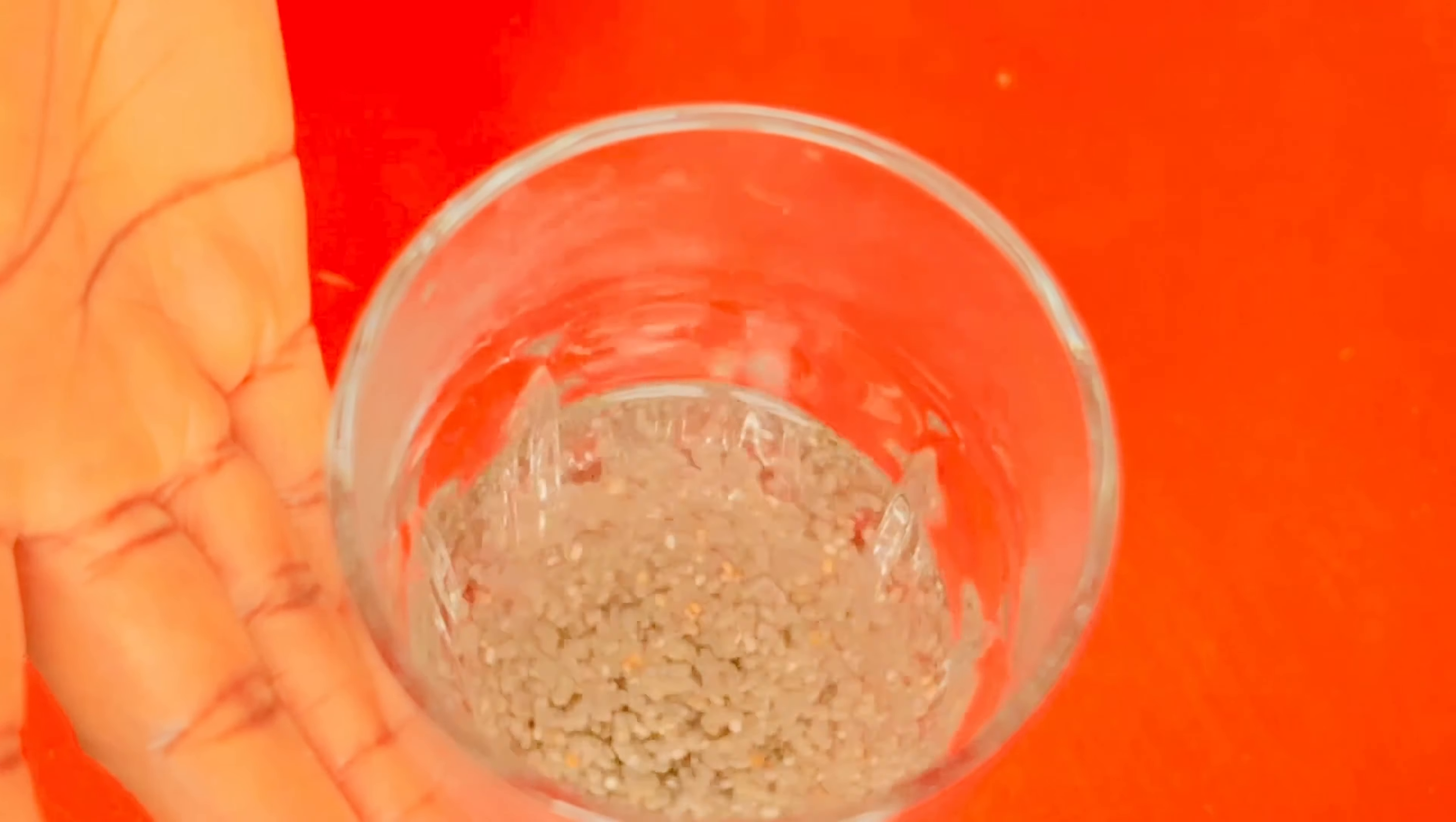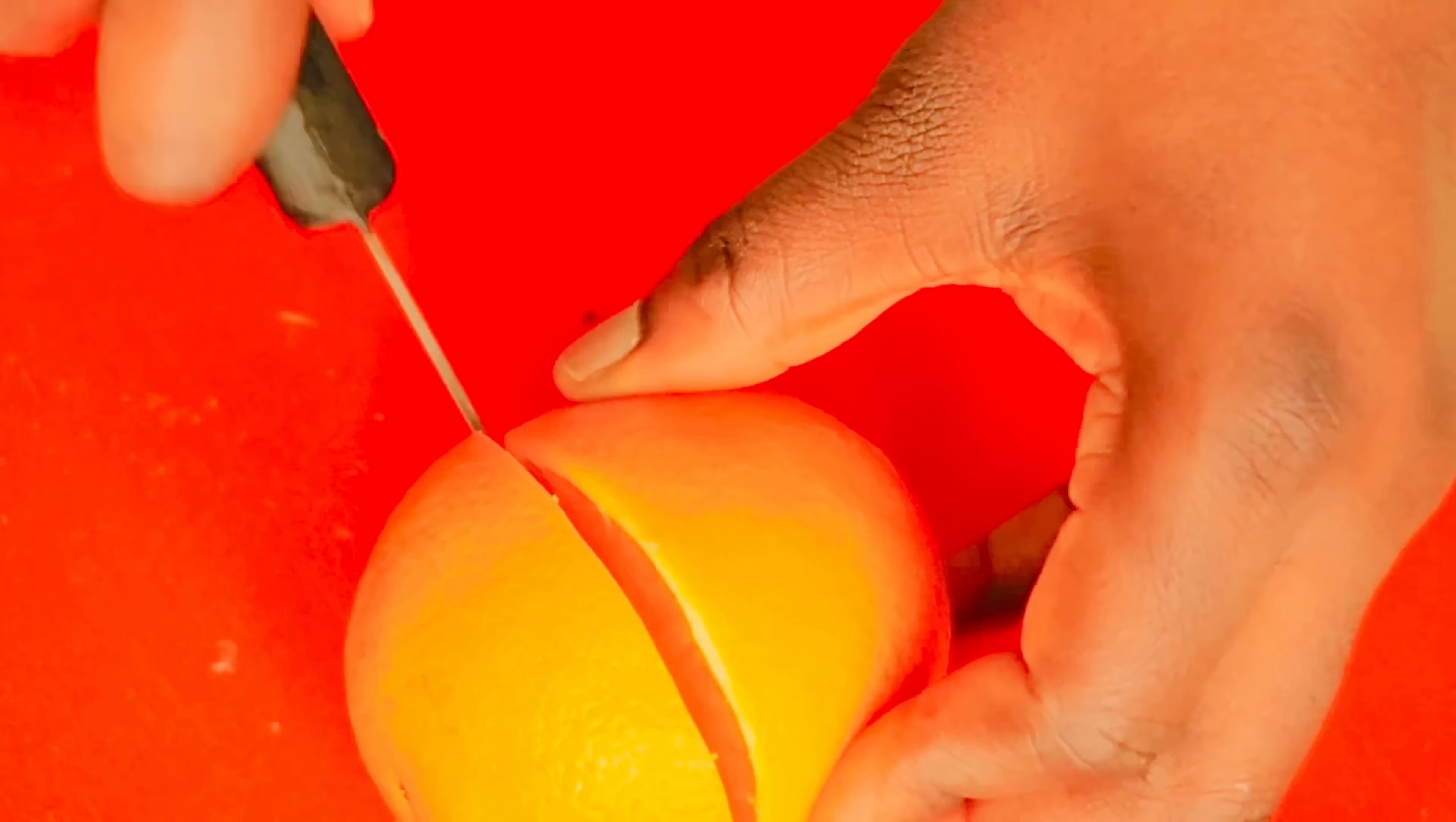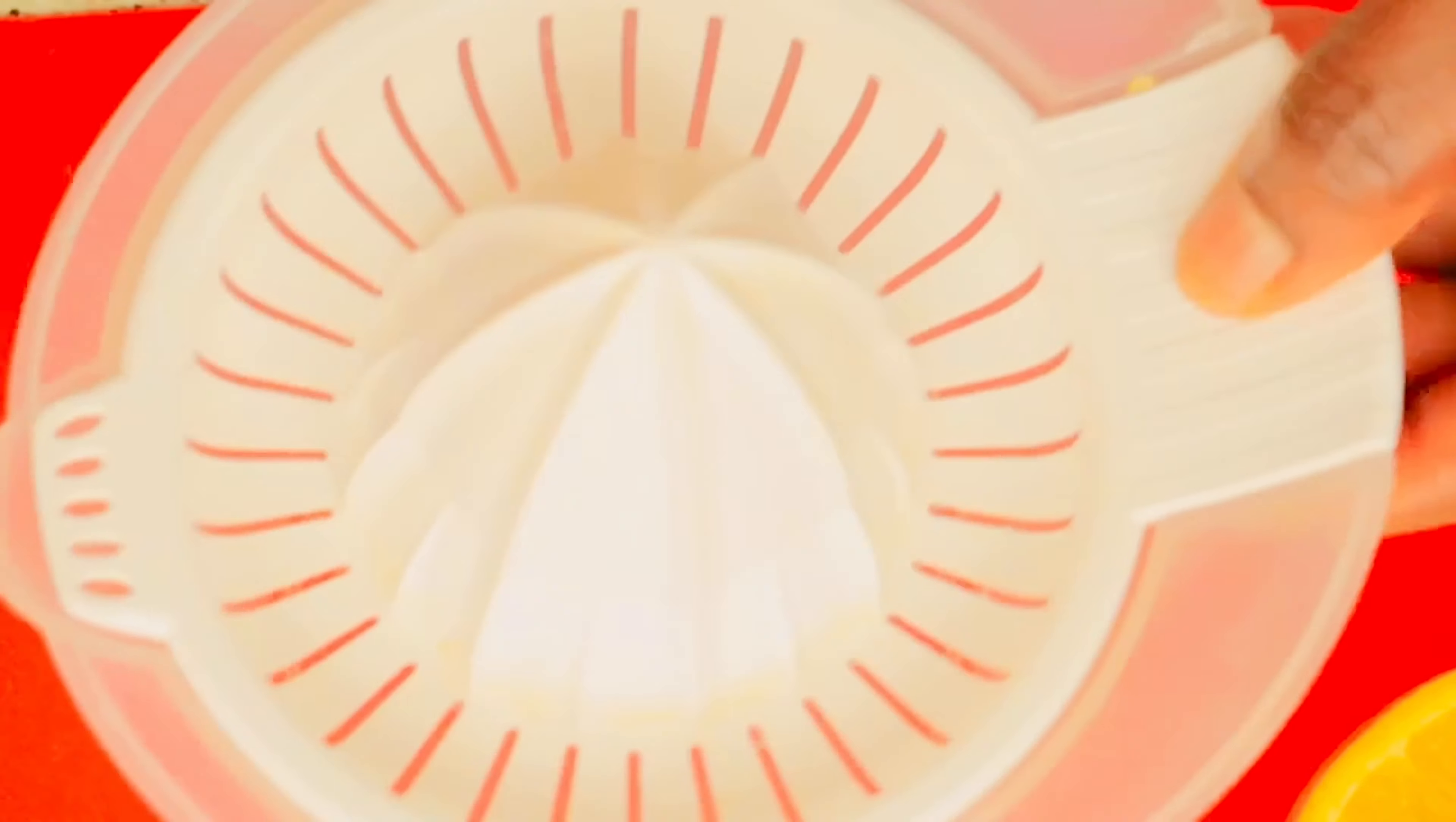I will allow it to sit for 10 minutes. While it sits for 10 minutes, we'll prepare what we're going to use to mix it together. This is orange. I'm making use of one orange in this recipe. I'll just squeeze the orange.